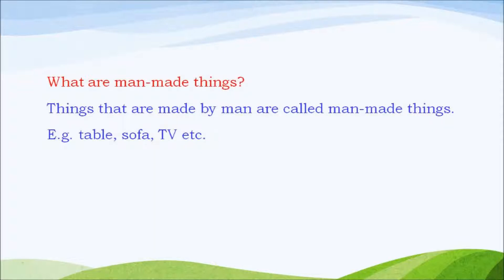What are man-made things? Things that are made by man are called man-made things. Examples of man-made things are table, sofa, TV, books, bags, etc.